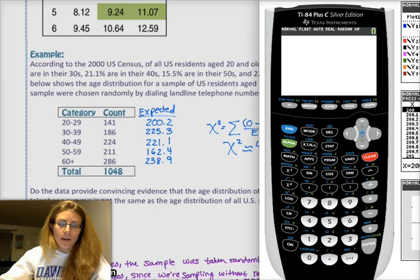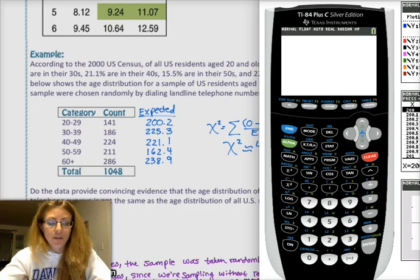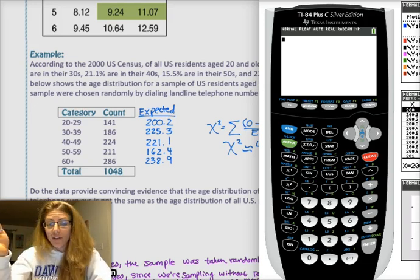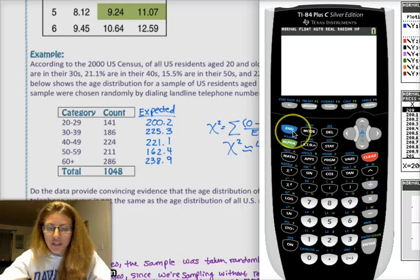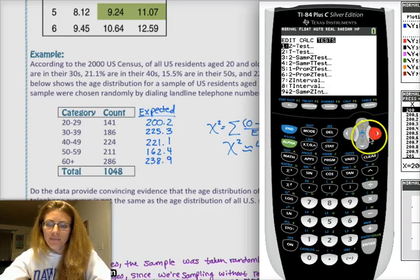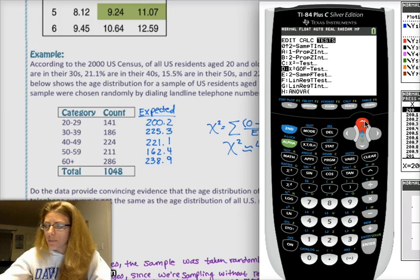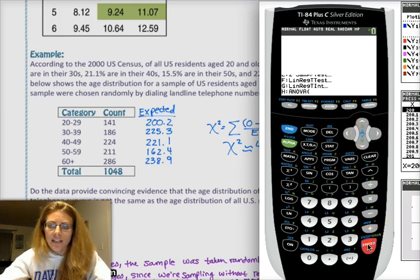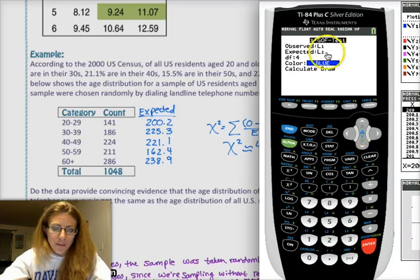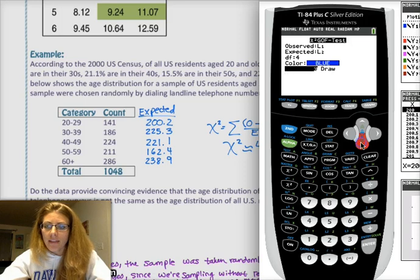Then from there, you can go to a table and find out your probability of getting that chi-squared value or anything more extreme. Or if you're lucky and you have a fancy calculator, you can just go to stat tests. Some calculators don't have the goodness of fit test, but mine does. So I'm going to go to the chi-squared goodness of fit test, hit enter, and then I put my observed values, which were list one, my expected values, which were list two, my degrees of freedom, which was four because I had five categories, and then I calculate.